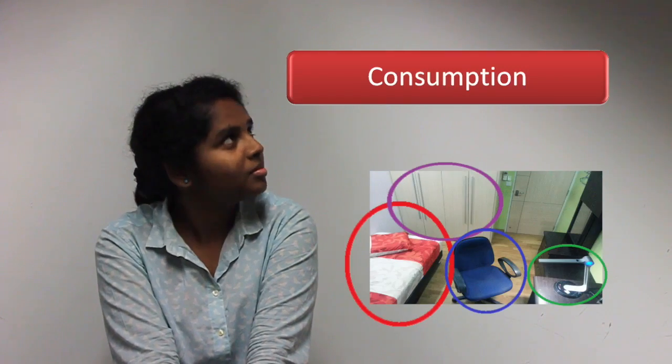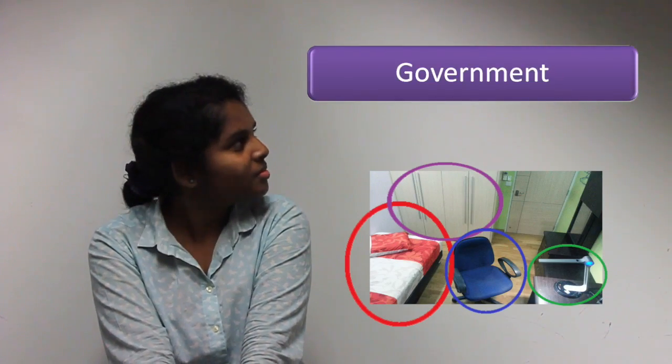Now whenever you picture this room, you remember the factors of GDP lie in your room. They are consumption, investment, government, and total exports.